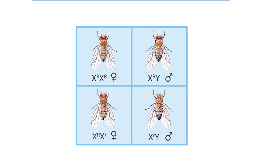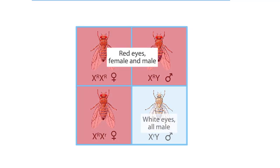Thus, the F2 generation shows the expected 3 to 1 ratio of red eyes to white eyes, but all of the white-eyed individuals are male.